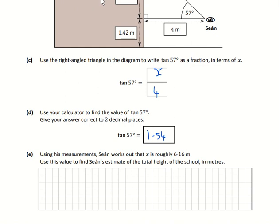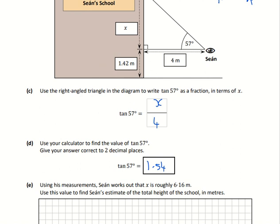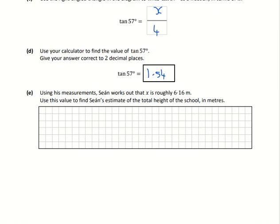Then use his measurements to work out that x is roughly 6.16. We know that tan 57 equals x over 4, so all we need to do to get x by itself is to move the 4 over to the other side.